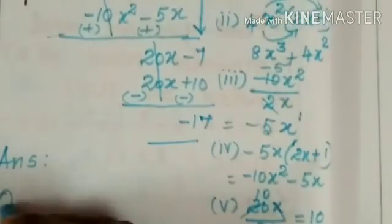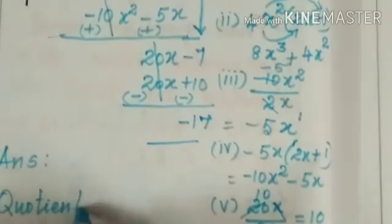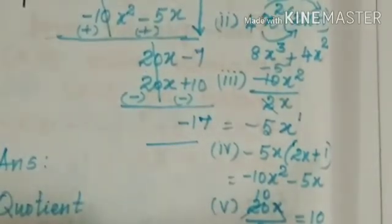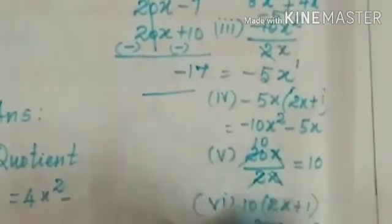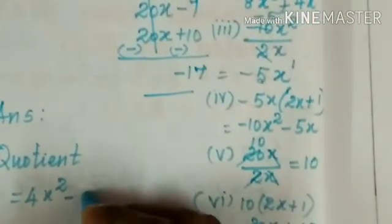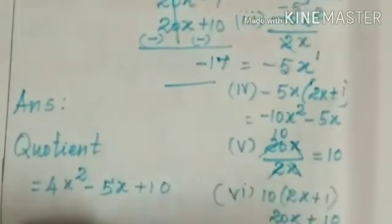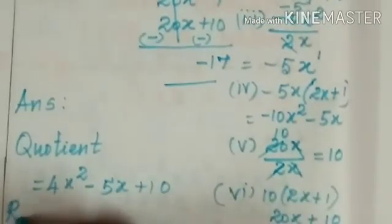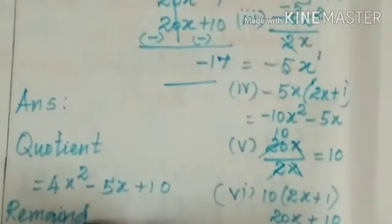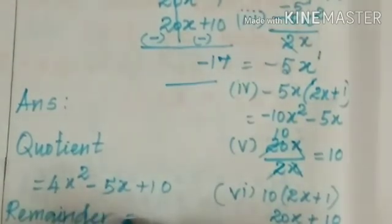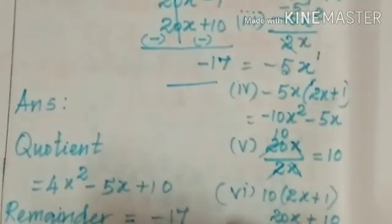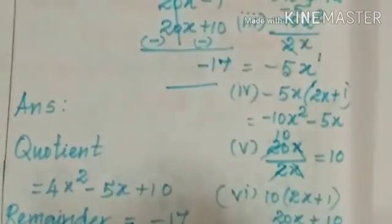So the quotient is 4x² − 5x + 10 and the remainder is −17. This is the answer for this sum.